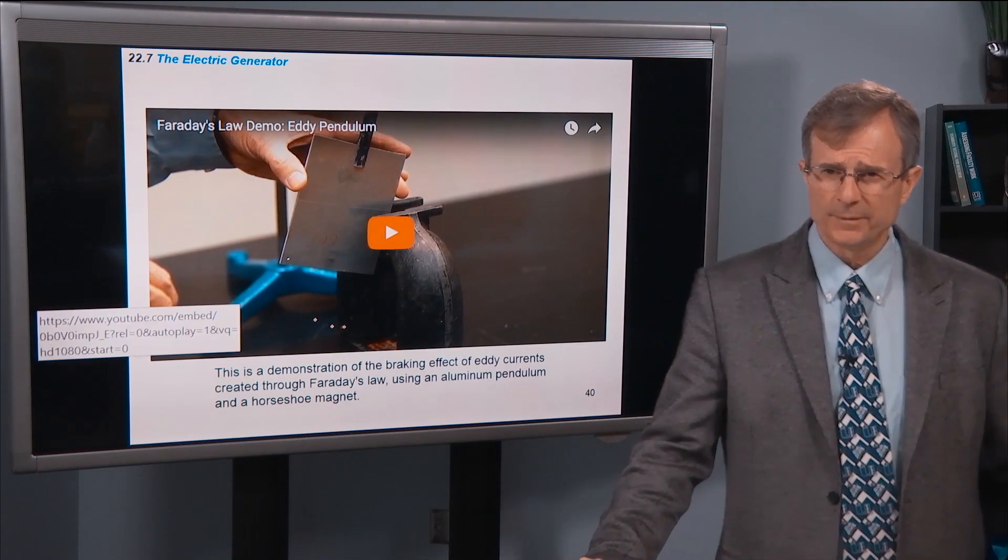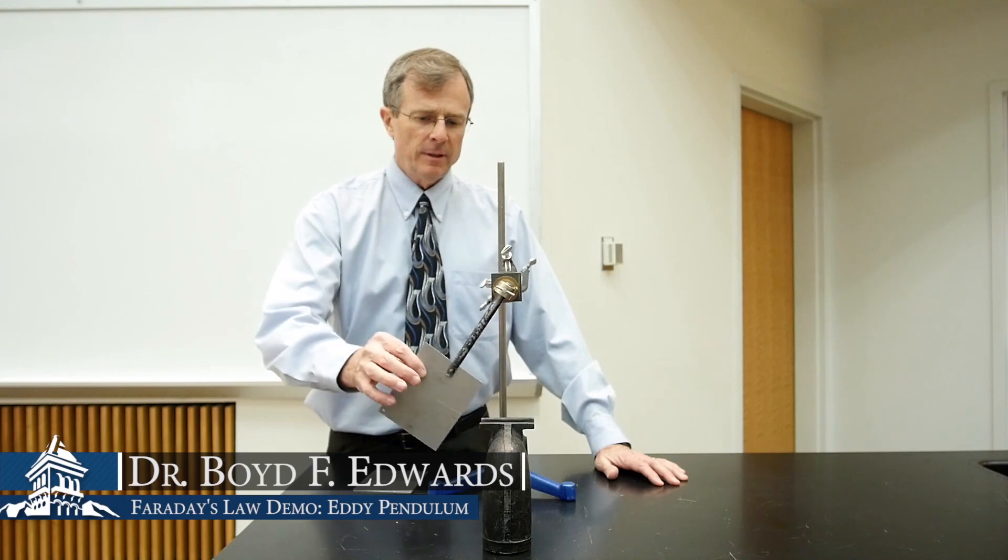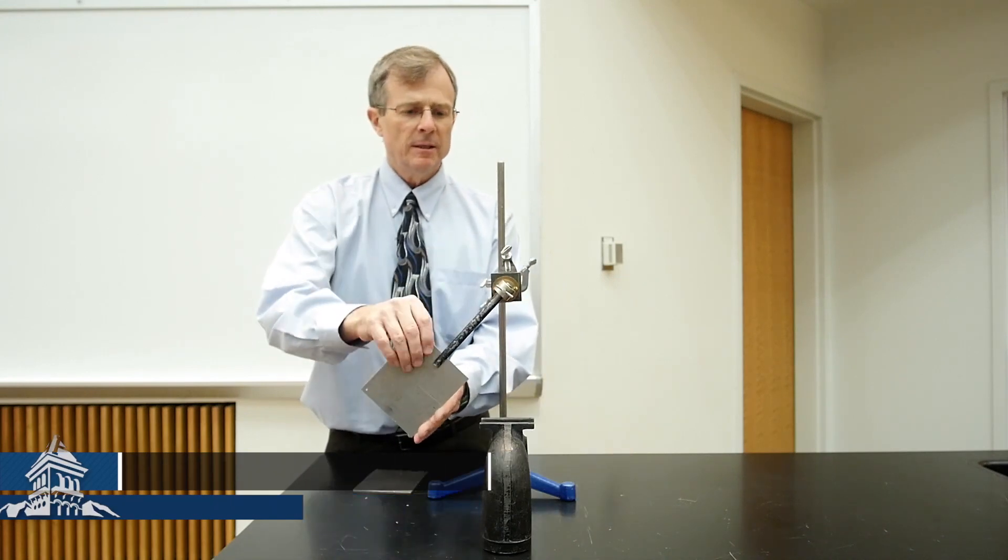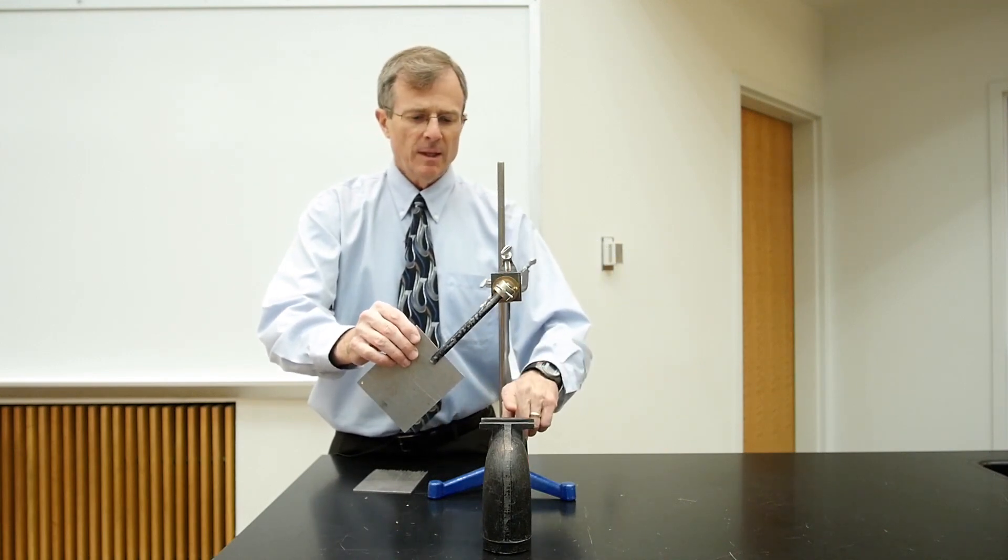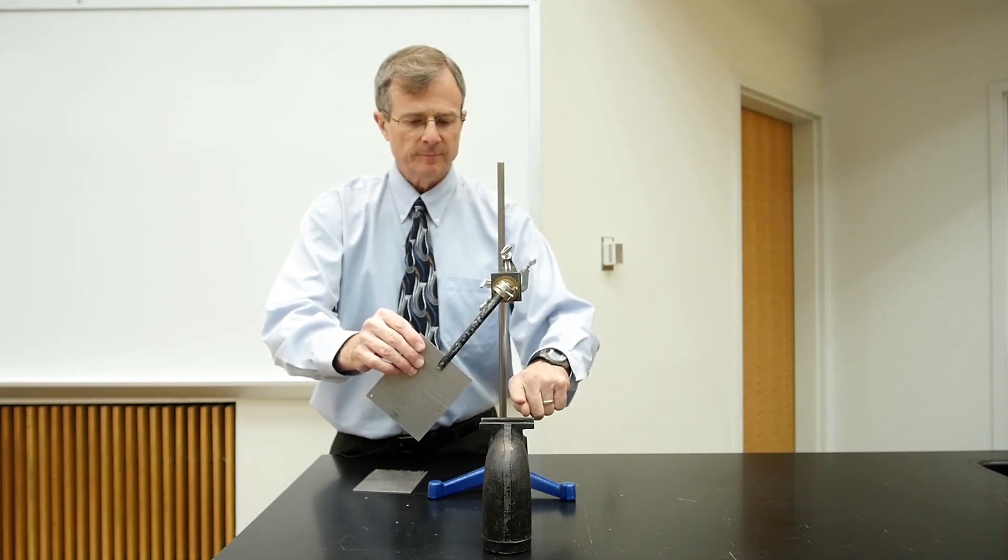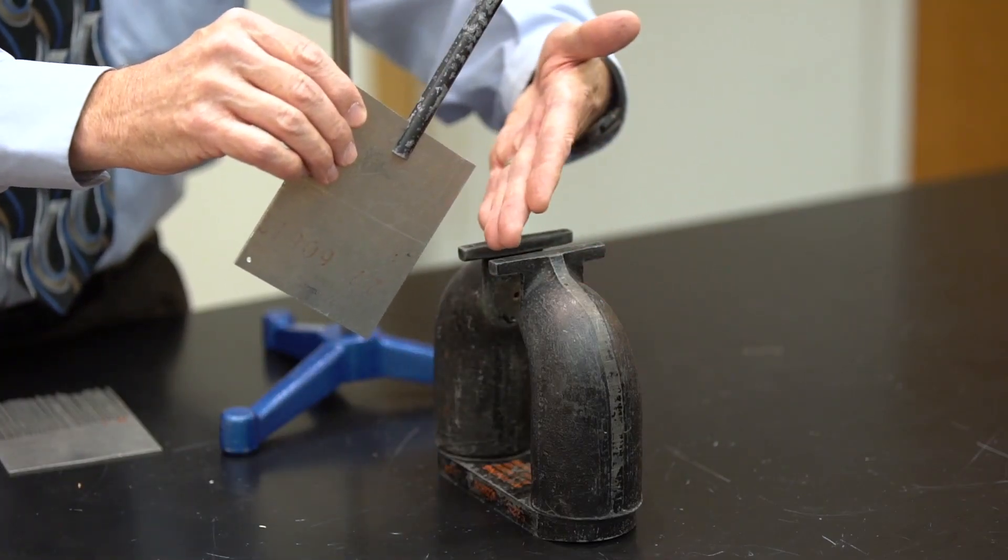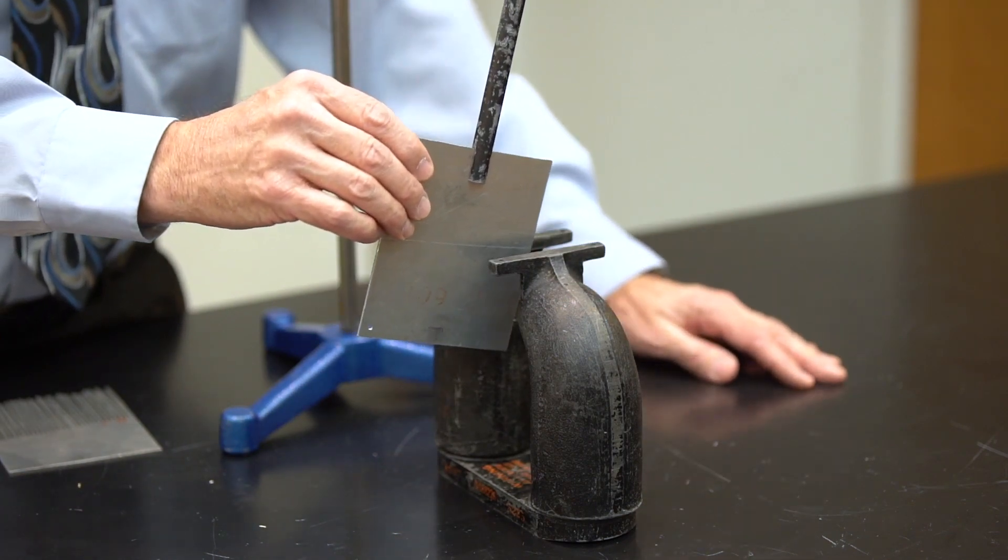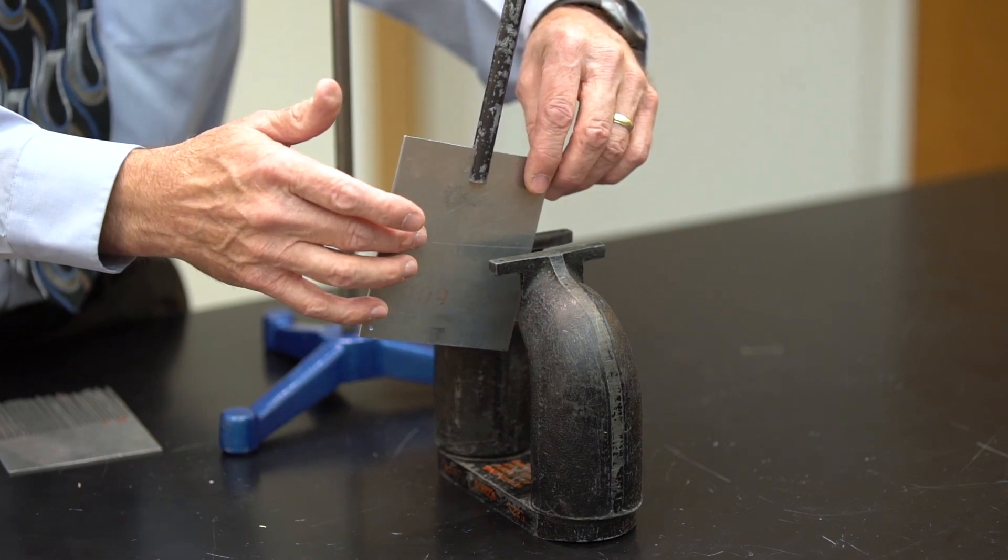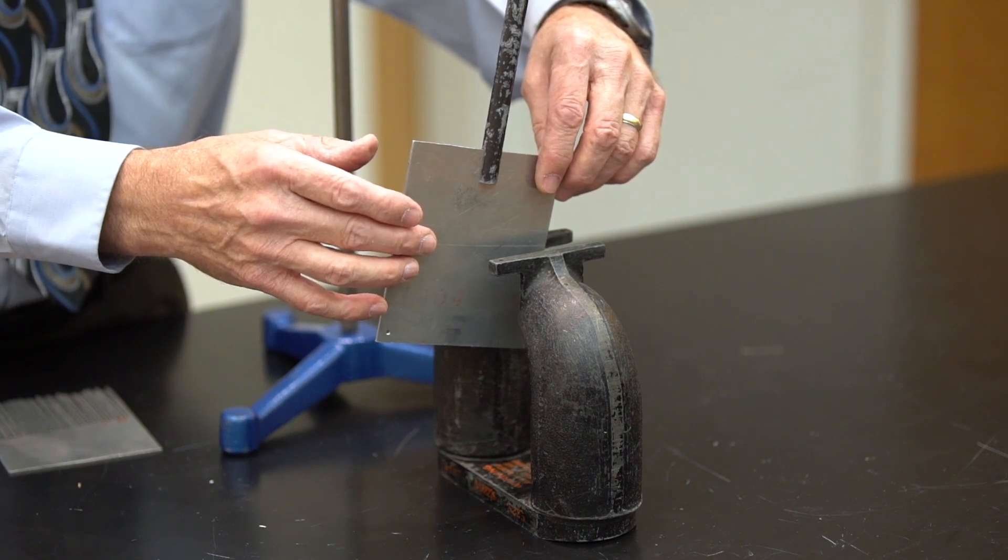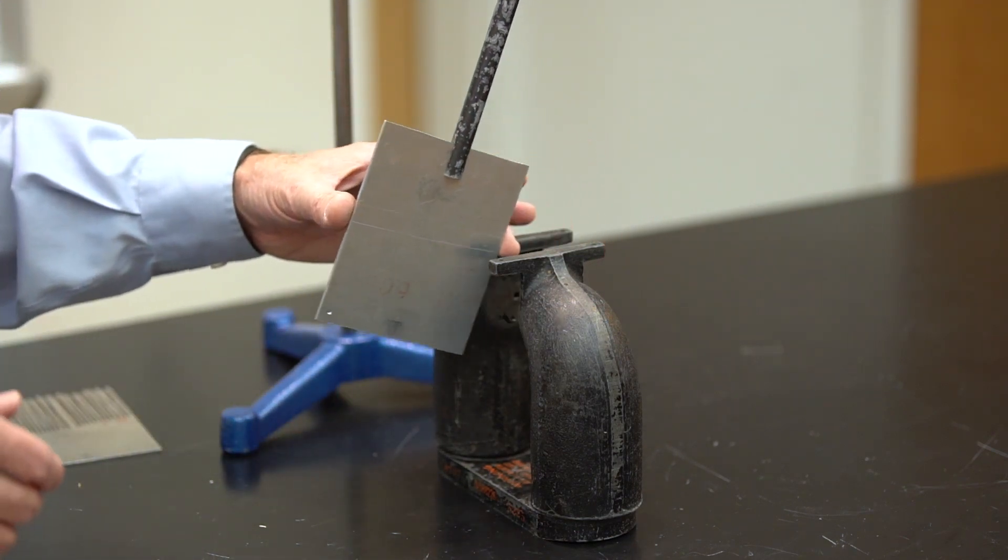So here's a demonstration of this back EMF. This is a demonstration of eddy currents. I have here a piece of aluminum suspended on a pendulum arm, and I have a powerful permanent magnet down here. It produces a magnetic field in this direction. And when this piece of aluminum enters that strong magnetic field region between the two poles of the magnet, the change in the magnetic flux through this piece of aluminum induces an EMF in the aluminum and currents in the aluminum.